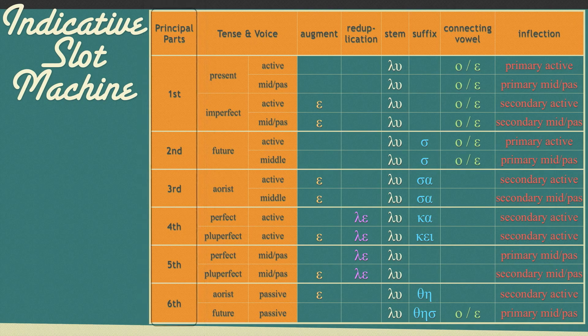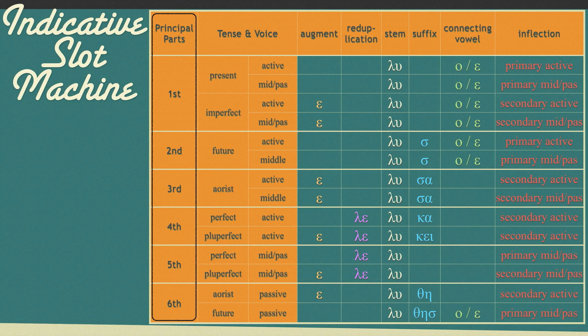Please notice the leftmost side of this table, called principal parts. This will become a regular part of our discussions when we talk about verbs, but I don't want to bog you down with that now. Just know that principal parts refers to the six possible spelling variations for every Greek verb.